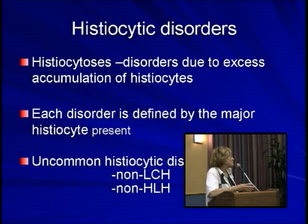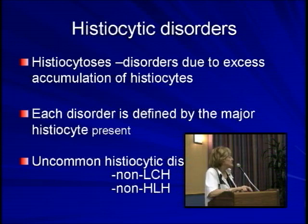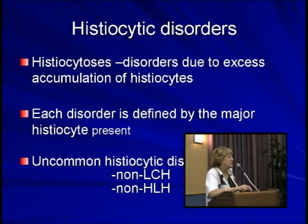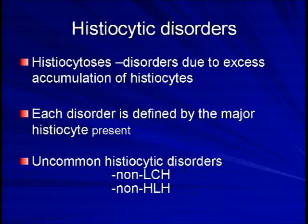As you heard from Dr. Aguilar this morning, the histiocytoses are defined as a disorder due to excess accumulation of the cell called histiocyte, which is actually a misnomer because, as he mentioned, it's a number of cells that are really important in the immune system. But in general, each disorder is defined or named by the major cell. So Langerhans cell histiocytosis is called that because the major cell is the Langerhans cell, which is one of the major cells for processing foreign proteins to present to the immune system. The uncommon histiocytic disorders are basically anything that is not LCH and is not HLH, so it encompasses everything else in this group of disorders.